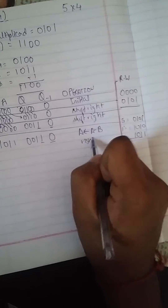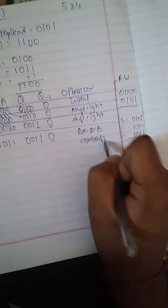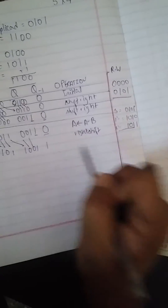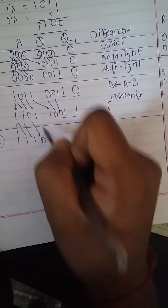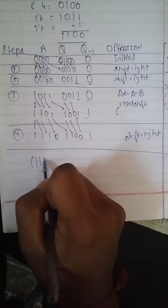We perform the subtraction: 1011 plus 0011 gives 1110. Then we shift towards the right. Since both the MSB bits are the same (1 and 1), no change — just shift right. The result after shifting is 1110, with Q becoming 1101 and Q-minus-1 becoming 1, giving us 11110011 shifted to 11110001 after the final shift right.